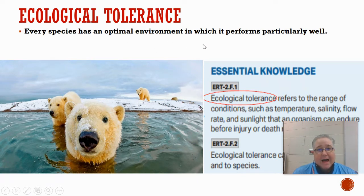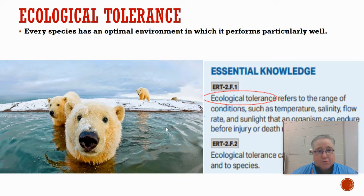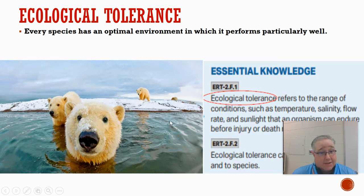Every species has an optimal environment in which it performs particularly well. Polar bears perform particularly well under a certain range of conditions. If the temperature was 95 degrees, polar bears probably wouldn't do as well. This is probably one of the reasons why they're struggling with global warming — it's getting much warmer, the ice is melting, and their environment is changing. So they have to adapt to those conditions, and if they can't, they're going to struggle.